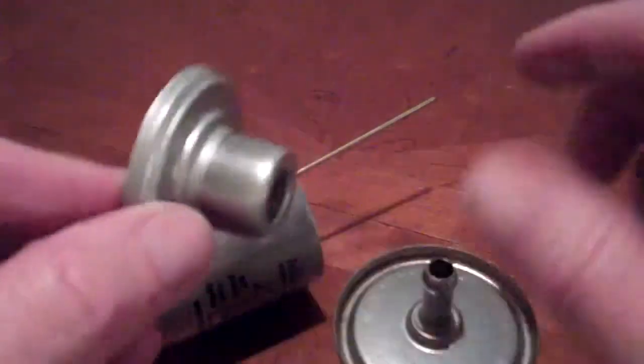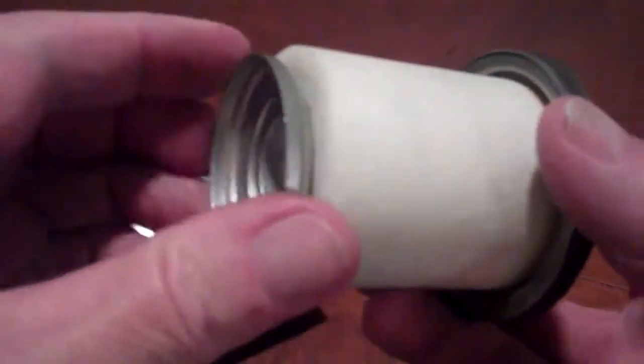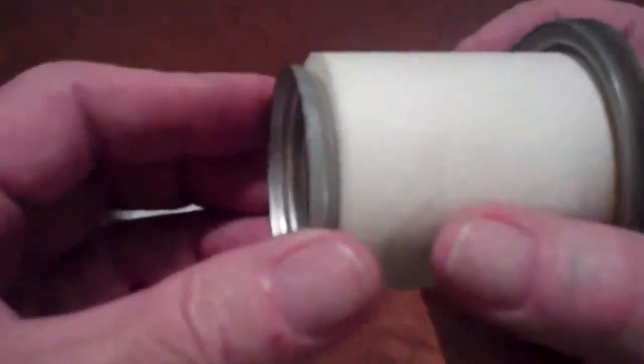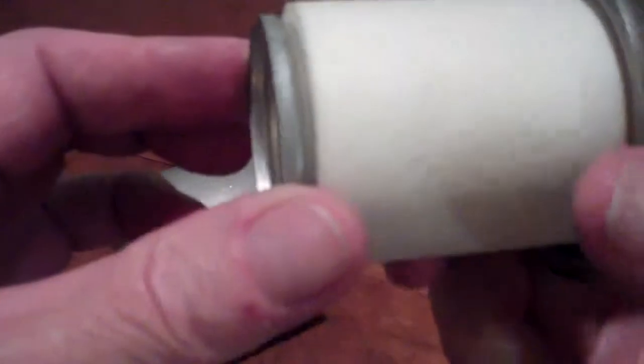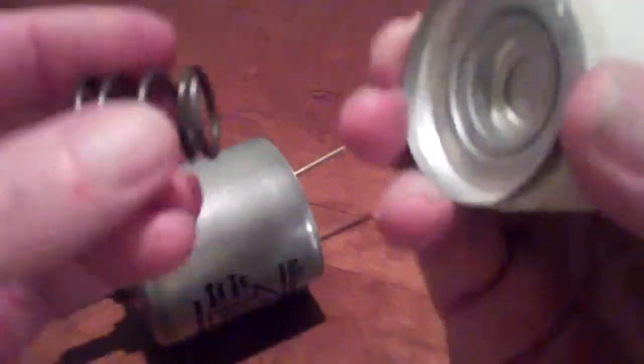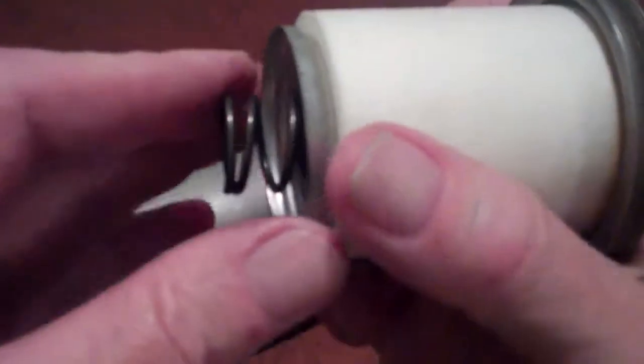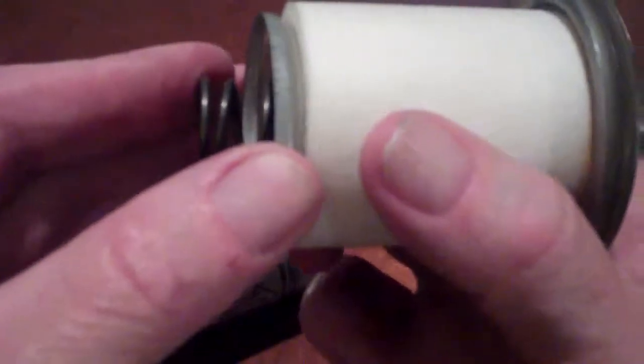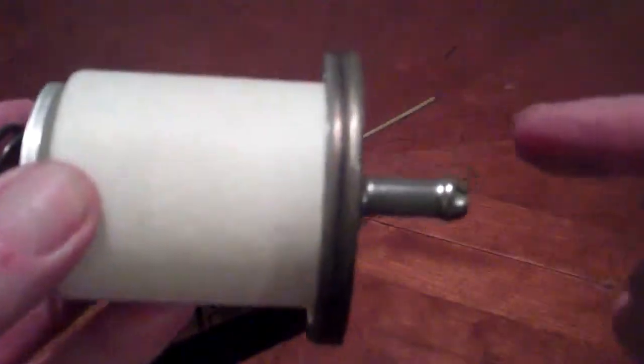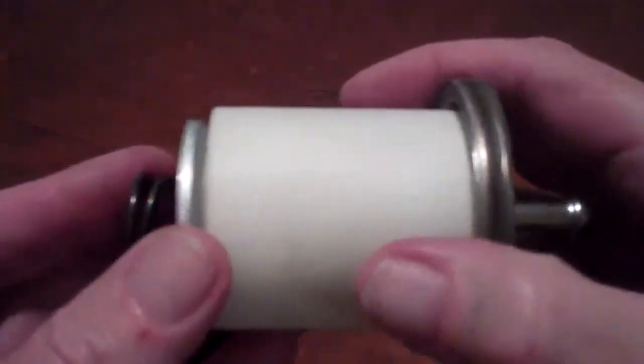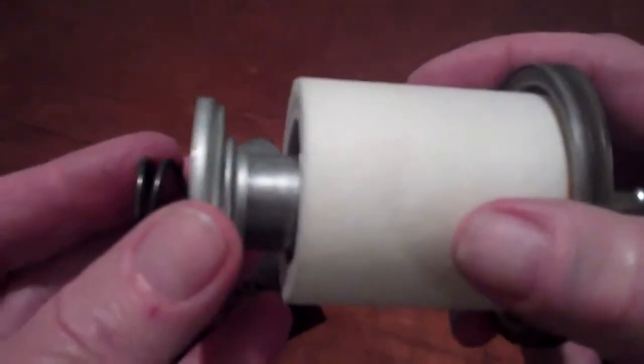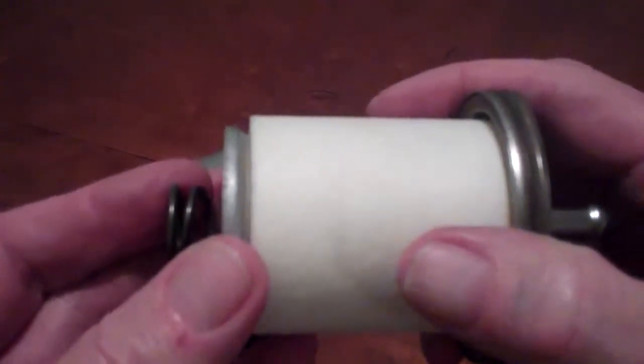Because this fits on the end of this - you need to depict this in the animation - this is normally against here because this is spring-loaded. This serves a dual purpose. If this is hooked up backwards and the fluid is going the other way, the fluid will blow this off and it will still flow fluid.